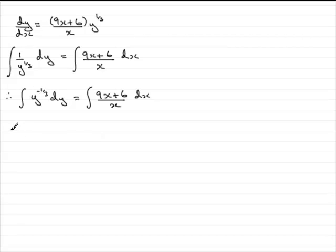Integrating y to the minus third, all we've got to do is add 1 to the power. So that's going to be y to the power 2 thirds, divide by 2 thirds, and you get 3 over 2.